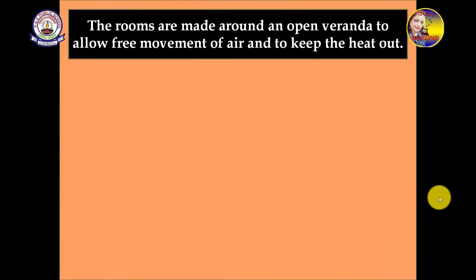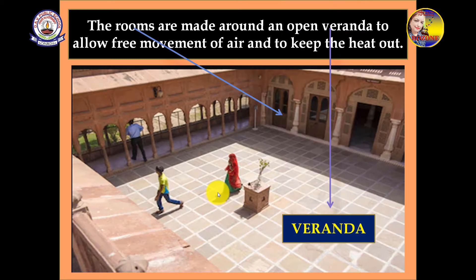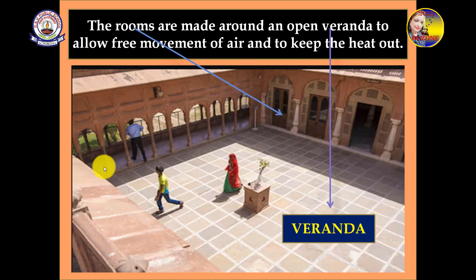The rooms are made around an open veranda to allow free movement of air and to keep the heat out. Can you see, children — this portion is the veranda and these are the different rooms arranged all around it, so the heat stays out of the rooms.